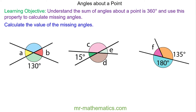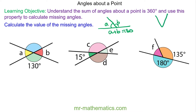Hello and welcome to our lesson on angles about a point. To calculate angles about a point we need to know two angle properties. The first one is that angles on a straight line add up to 180 degrees, so a plus b is equal to 180. The second angle property is that angles about a point add up to 360.